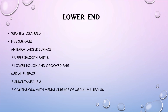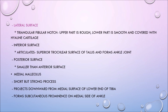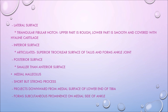Moving on to the lower end of the tibia — it is slightly expanded and has five surfaces. The anterior larger surface has an upper smooth part and a lower rough and grooved part. Its medial surface is subcutaneous and continuous with the medial surface of the medial malleolus. The lateral surface has a triangular fibular notch; its upper part is rough and the lower part is smooth and covered with hyaline cartilage. The inferior surface articulates with the superior trochlear surface of the talus and forms the ankle joint. The posterior surface is smaller than the anterior surface. The medial malleolus is short but strong, projecting downwards from the medial surface of the lower end of the tibia, forming a subcutaneous prominence on the medial side of the ankle.